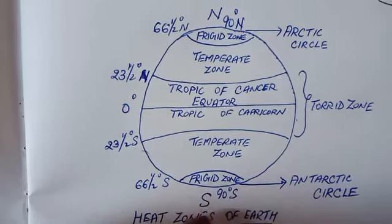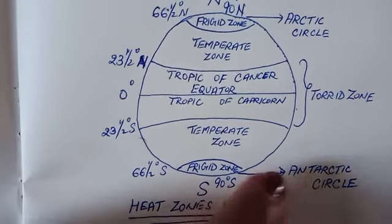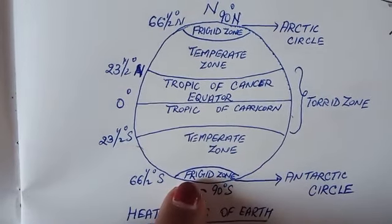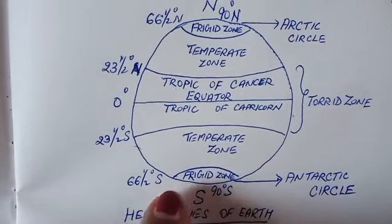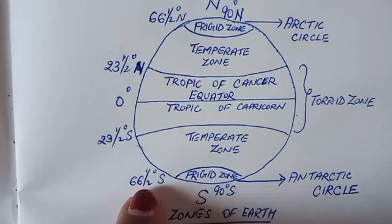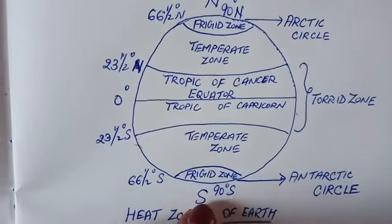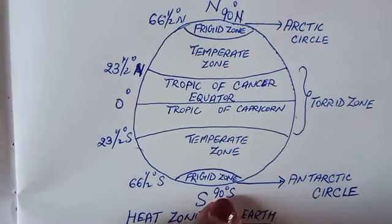The Antarctic Circle, which is also known as the frigid zone, is present between 66 and a half degree south to 90 degree south.